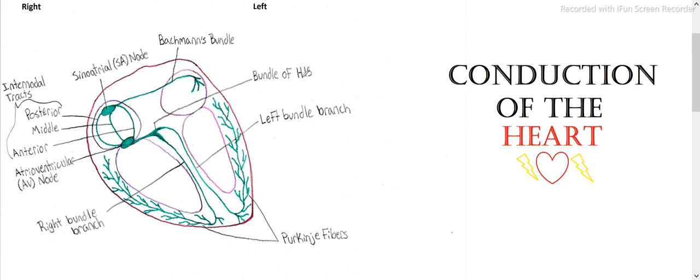For a bundle of His, I think of a man bundling something up, because it's his. So it's his, so he bundles it up, bundle of His. And since this is a bundle, it splits off into the right side and the left side, and they both have bundle in their name. So right bundle branch and left bundle branch.